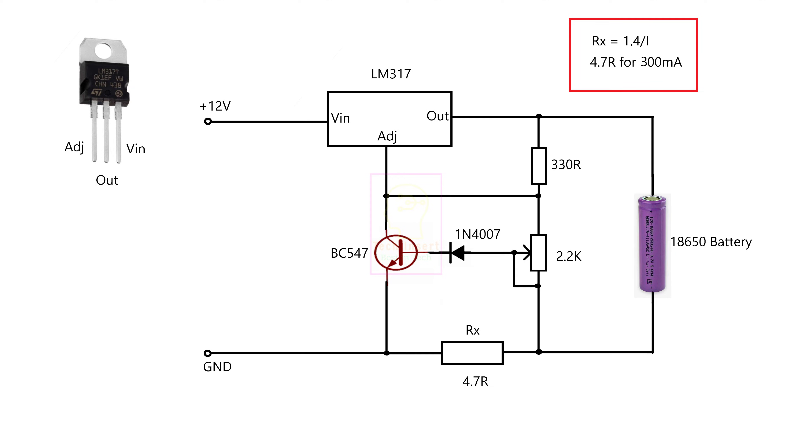This is the circuit diagram, and you can see it is very simple. 2.2K preset is used for fixing the output voltage.